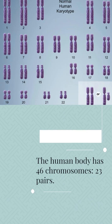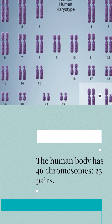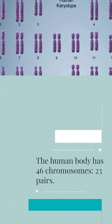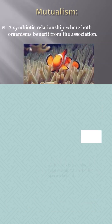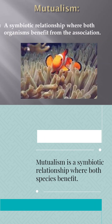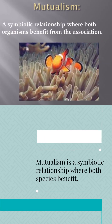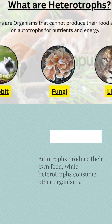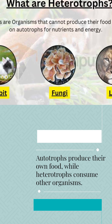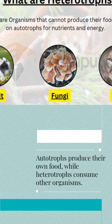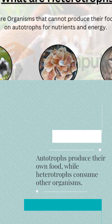The human body has 46 chromosomes, 23 pairs. Mutualism is a symbiotic relationship where both species benefit. Autotrophs produce their own food, while heterotrophs consume other organisms.